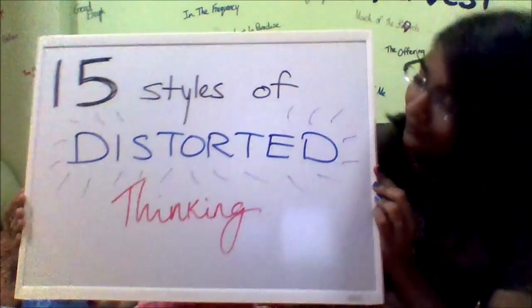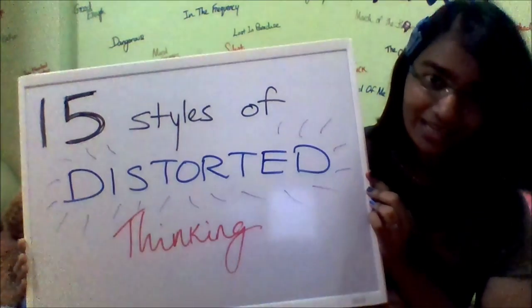Hey, what's up, all you beautiful people! It's Ashley here, and today's video is about the 15 styles of disordered thinking. This is actually based on a post made by Neuralove. I'm going to be going through the 15 different styles of disordered thinking, but a more recognizable term would be cognitive distortions — exaggerated or irrational thought patterns that are believed to perpetuate the effects of psychopathological states, especially depression and anxiety.